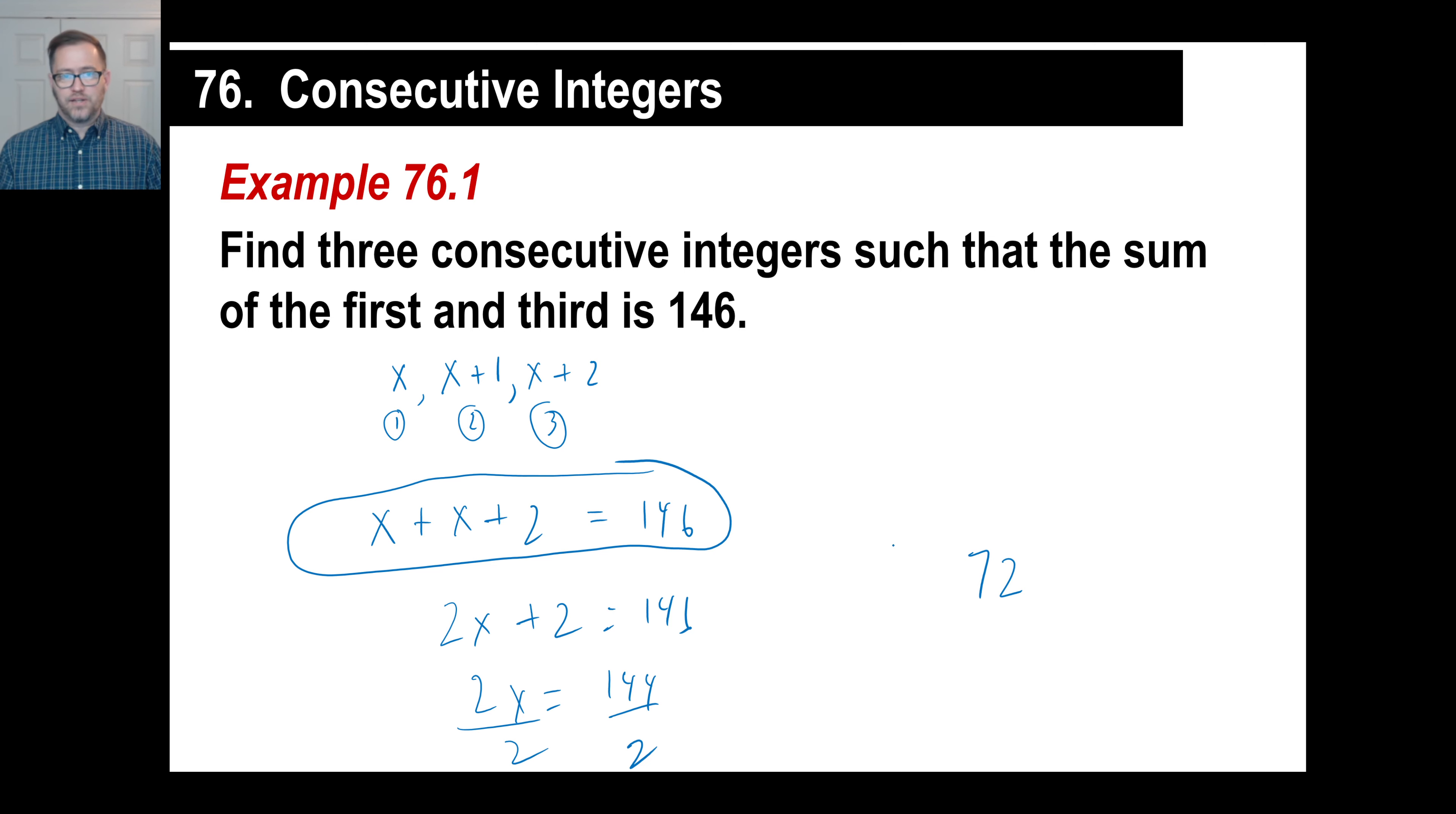What you want to write as an answer, if they say find three consecutive integers, you go 72, 73, and 74. By the way, you can always check your answers. Is the sum of the first and the third, which is that one and that one, if you add those two, does that give you 146? The answer is yes. That works.